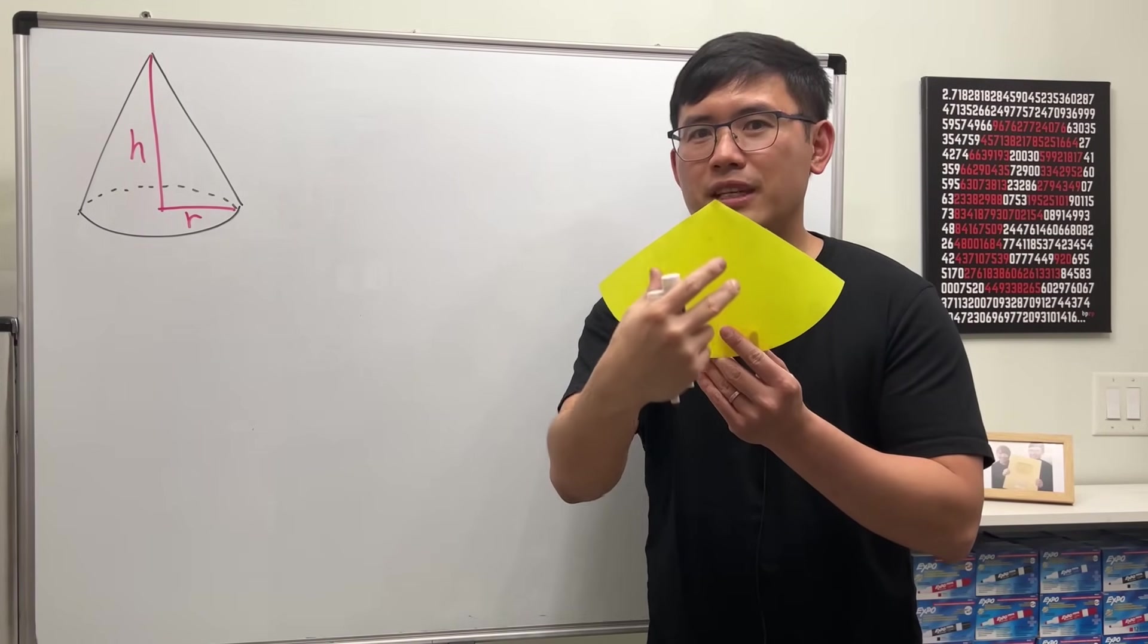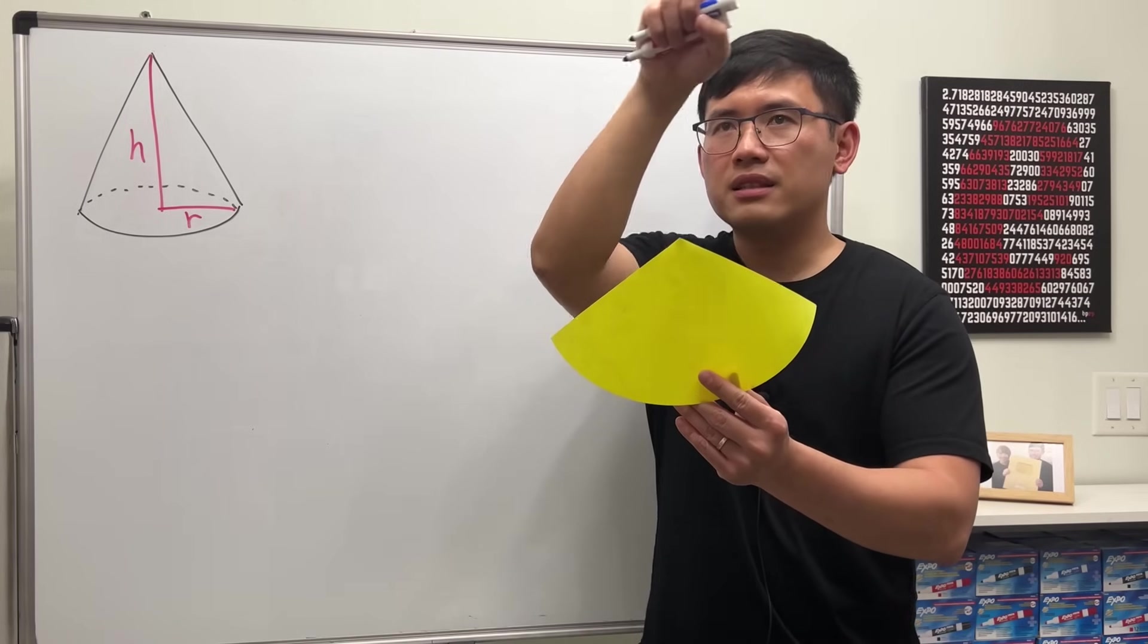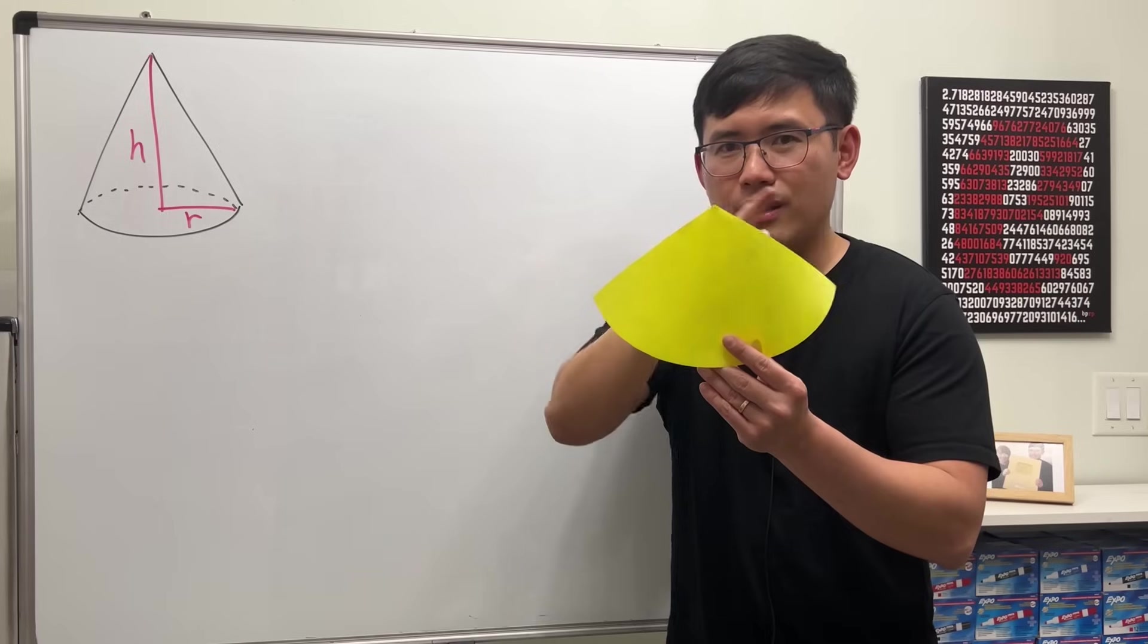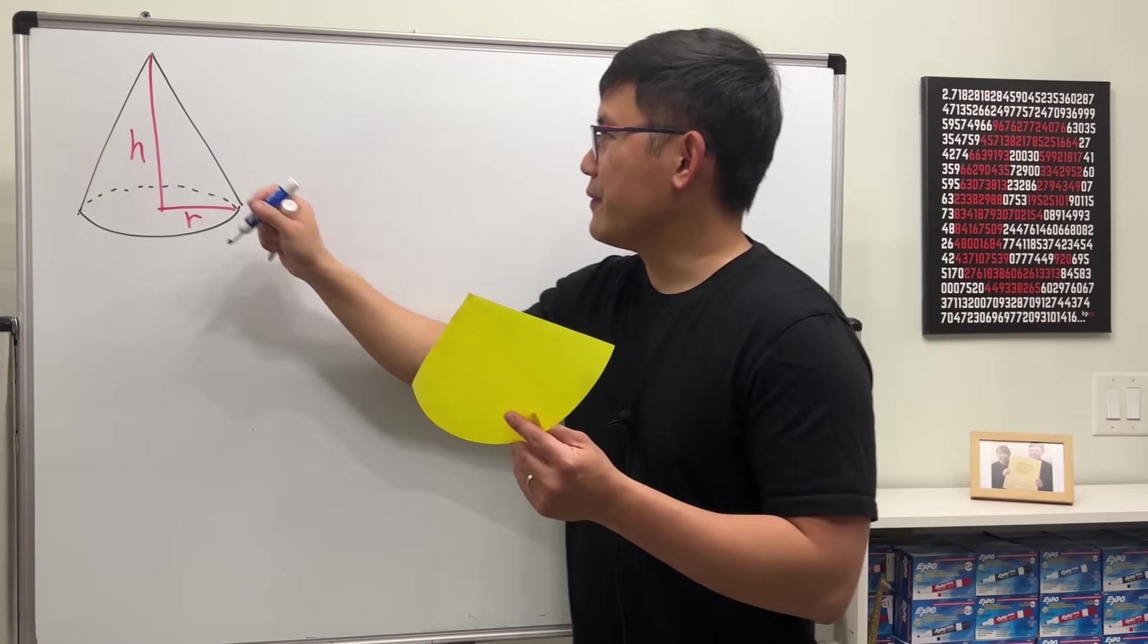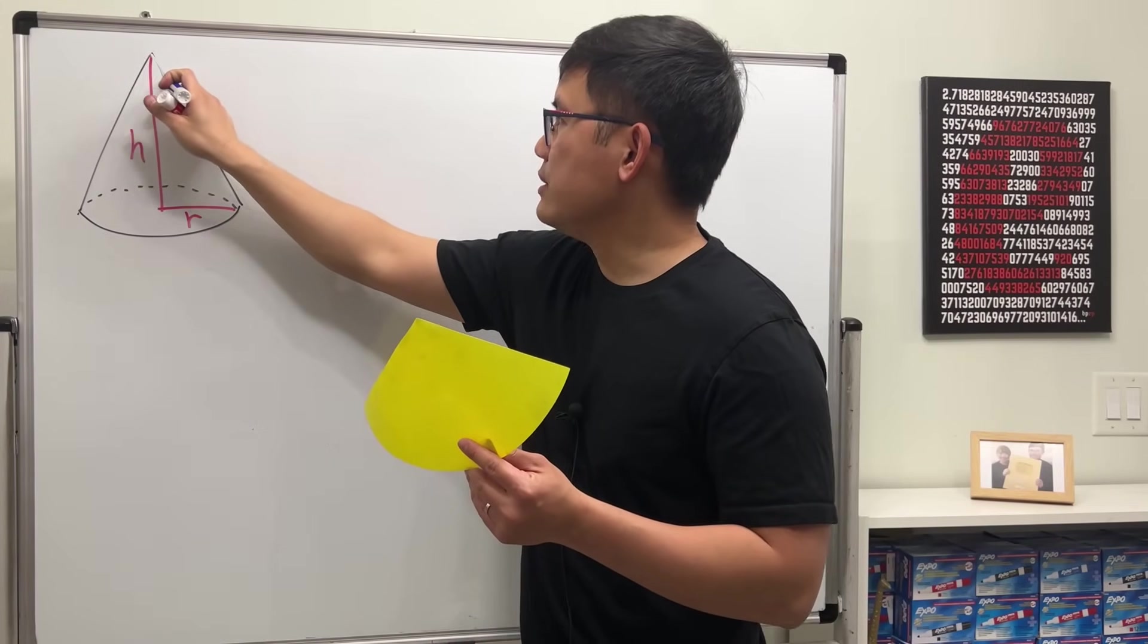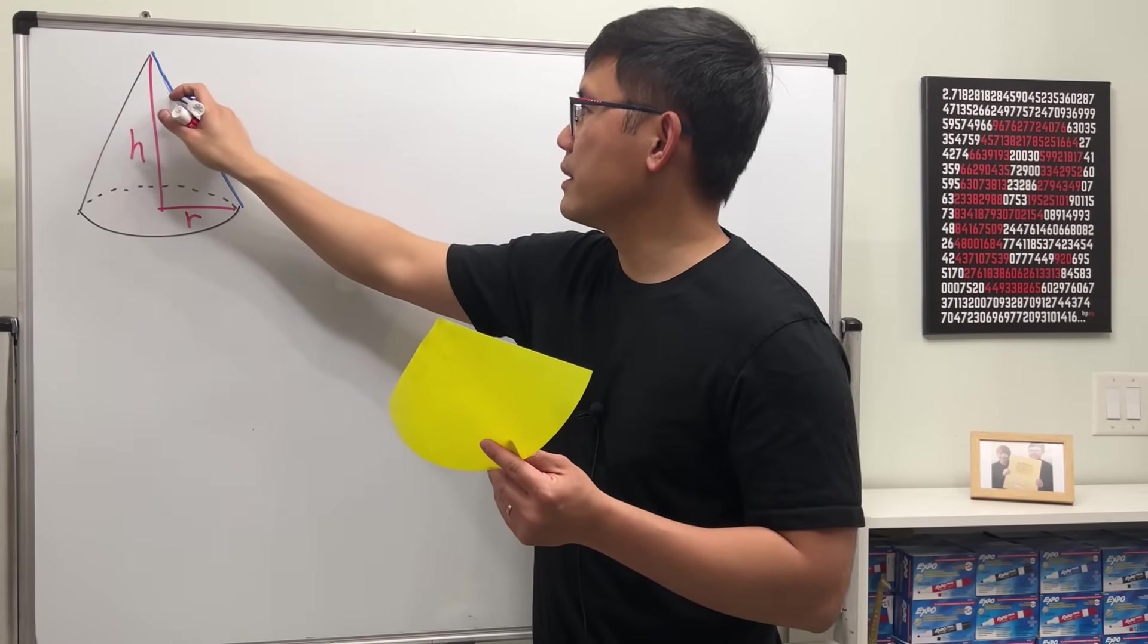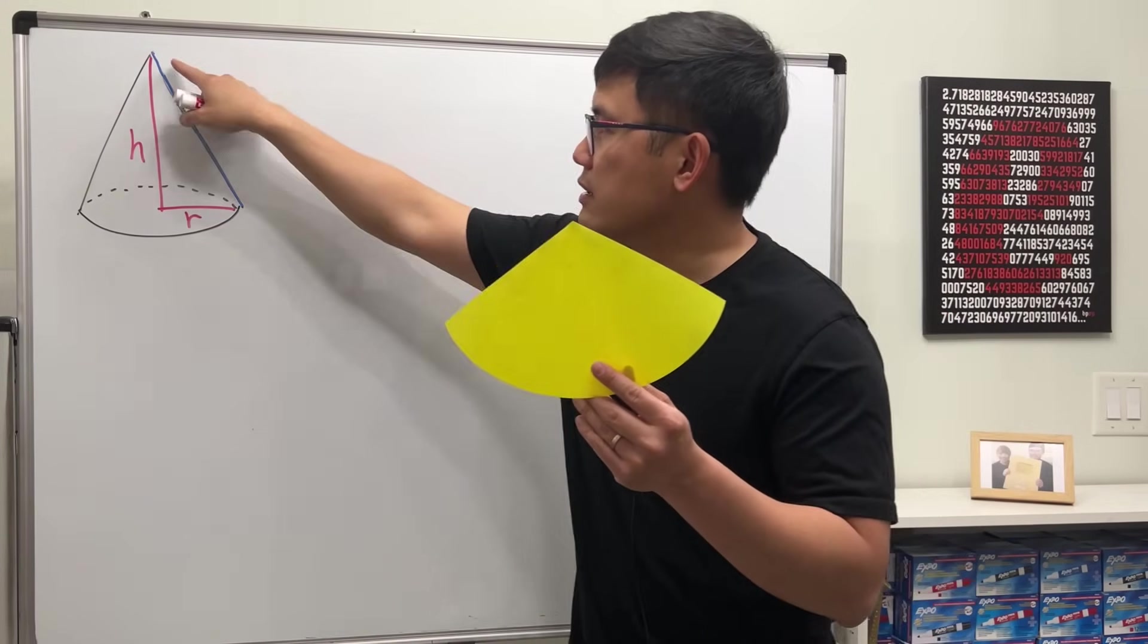This is actually a part of a circle. You can just imagine you extend the circle like this and this is the center of that circle. So if we take this and just cut it off, we get this kind of shape.